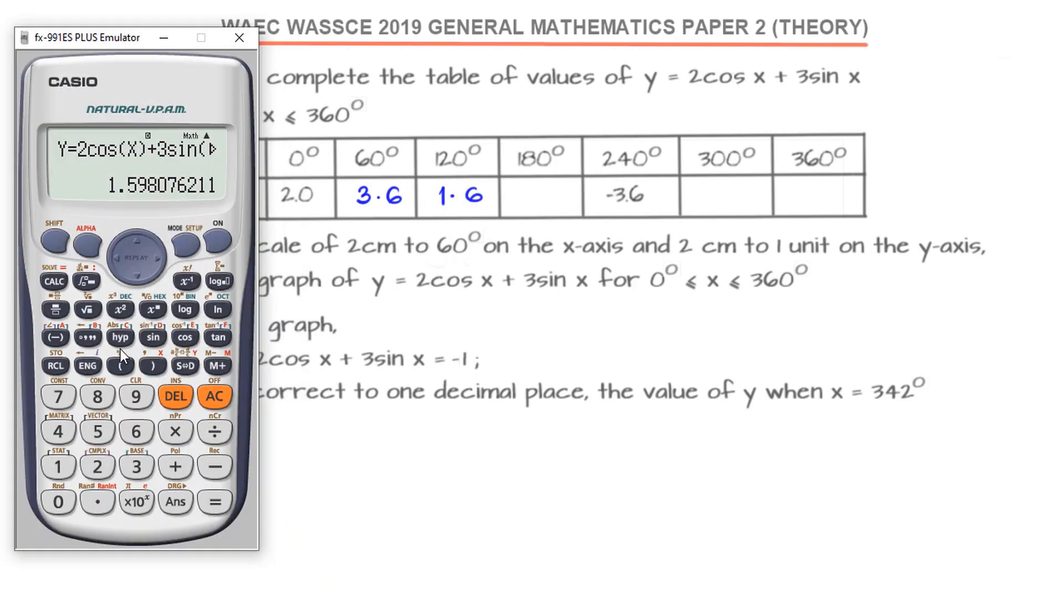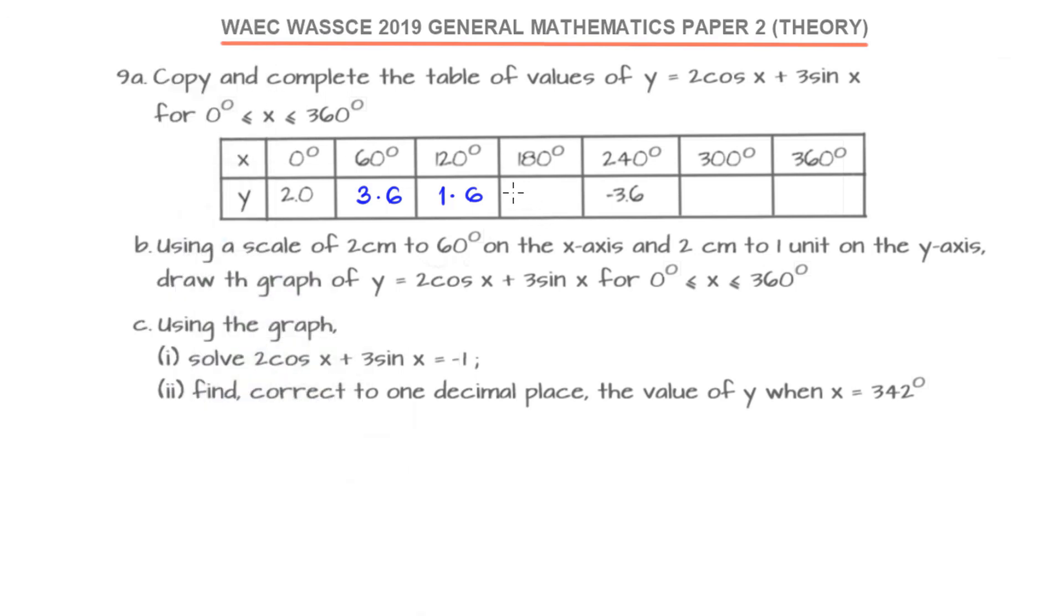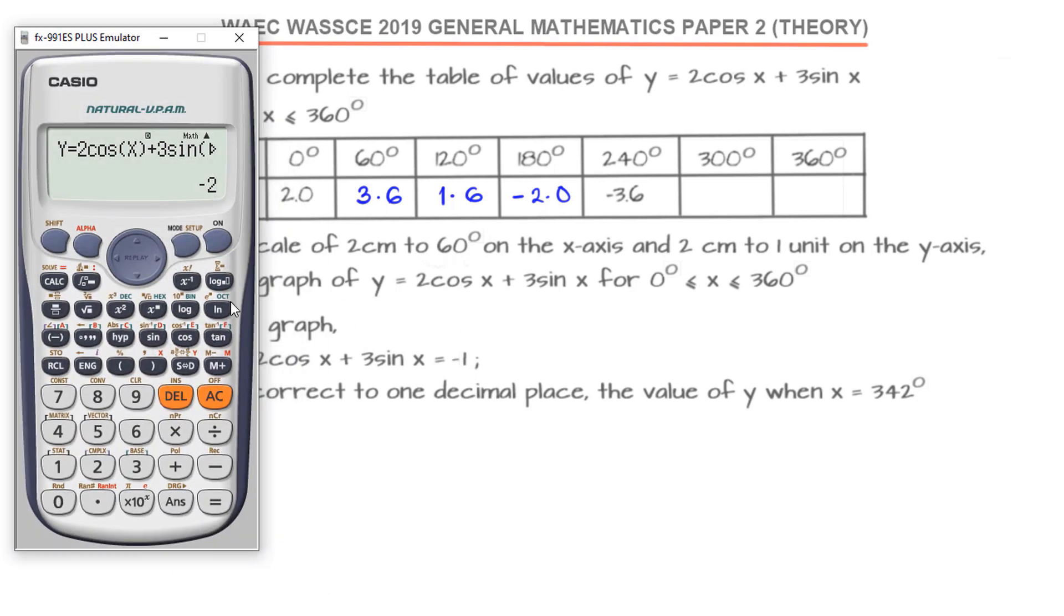As a rule of thumb, generally I advise students that you don't need to be calculating piecewise like this. It is better for you to actually use the table. The fx-991ES has a function of generating a table automatically for you, and that will limit the error that could have been generated. Go to mode, then send one for table. Our function is 2cos(x) + 3sin(x). Start value is 0, end value is 360, and the incremental step is 60 degrees.